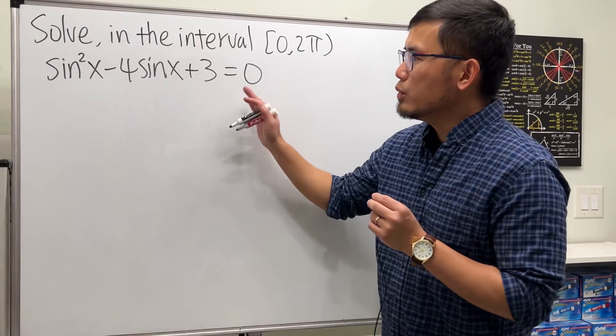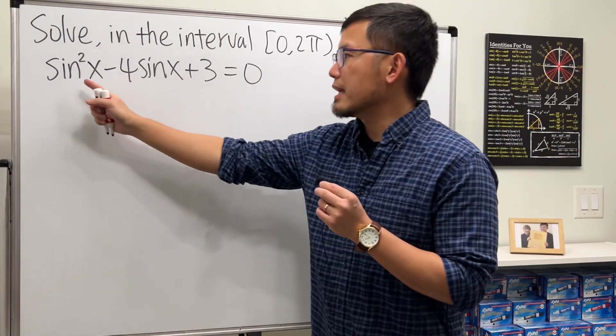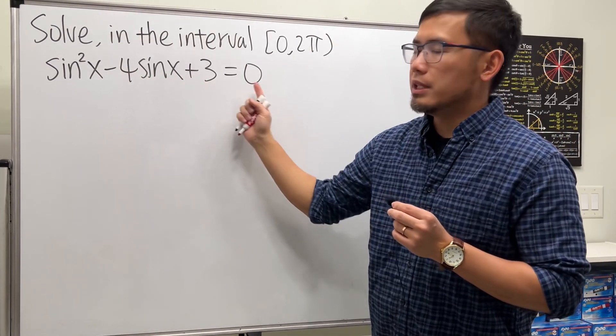So the question from Reddit today is how do we solve this equation by factoring? Notice here we have sine squared x minus 4 sine x plus 3 equals 0.